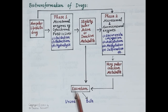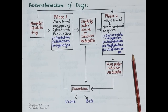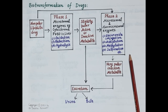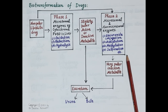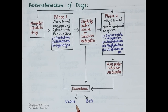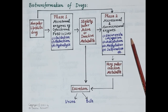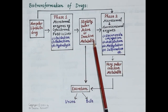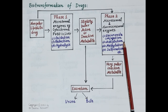Drugs are metabolized by two types of reactions: phase 1 reactions and phase 2 reactions. In this video we are going to study phase 2 reactions for the biotransformation or metabolism of drugs — this is the ninth video in the series on pharmacokinetics. A drug undergoes phase 2 reaction to produce very polar, mostly inactive metabolites that are rapidly excreted primarily in the urine. Phase 2 reactions are also called conjugation reactions, where a highly polar compound is conjugated with the drug. A drug can directly undergo phase 2 reaction, or a metabolite of a phase 1 reaction can further undergo phase 2 reaction.